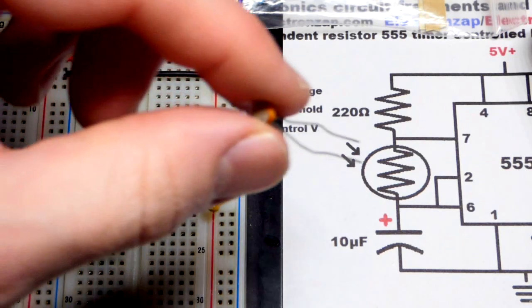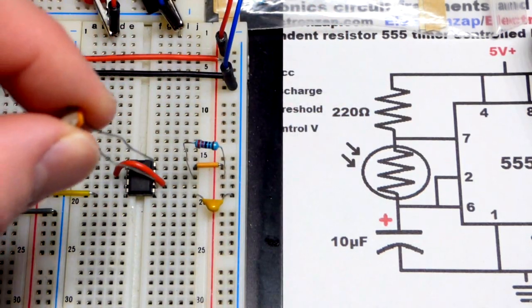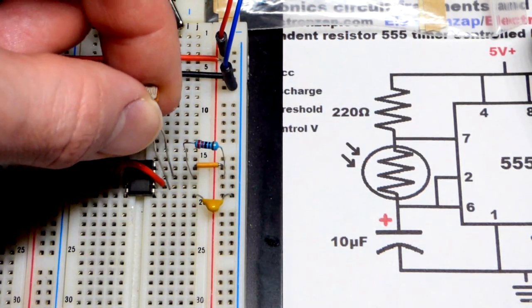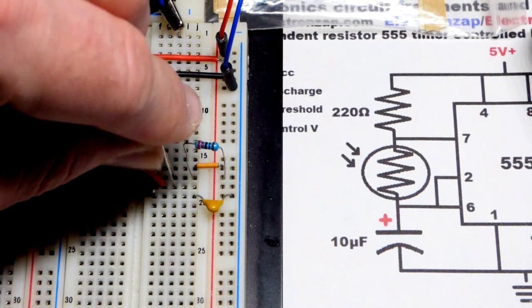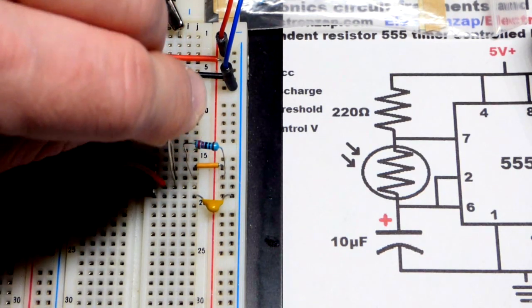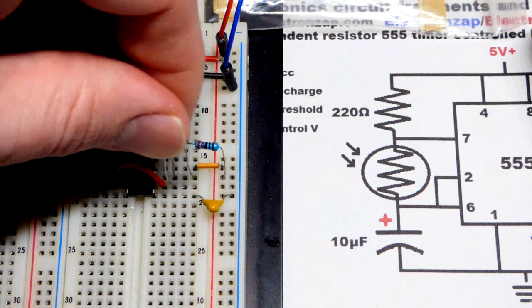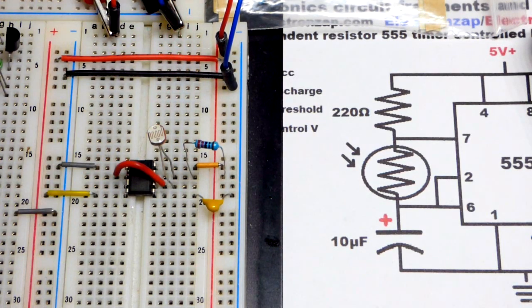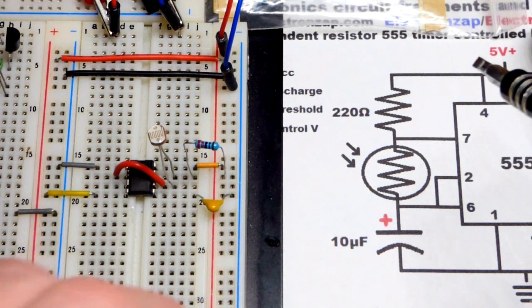The next resistor. So pin 7 to pin 6 is our light dependent resistor. Which again, its value and resistance changes based on how much light is falling on it. Right there.